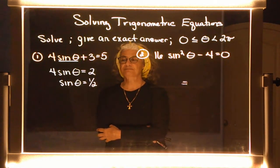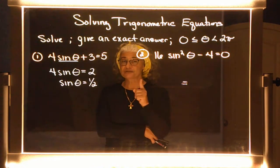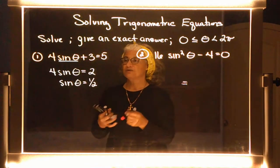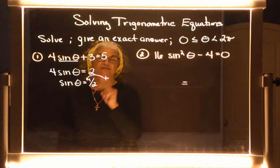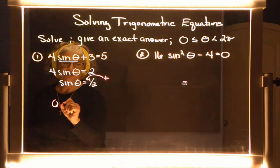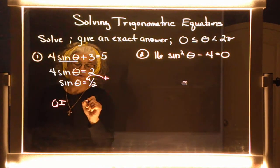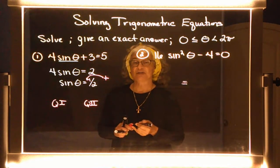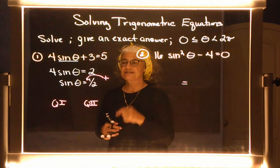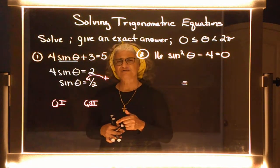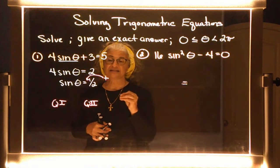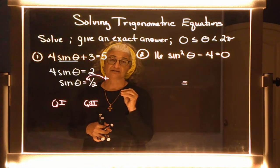Now, a couple of things to think about. First, I need to know what quadrant I'm in. My answer is positive, which means I'm either in quadrant one or quadrant two, because sine is Y over R, and Y's are positive in quadrants one and two. The second thing is I need a reference angle, because one over two — those two numbers are on one of my triangles.